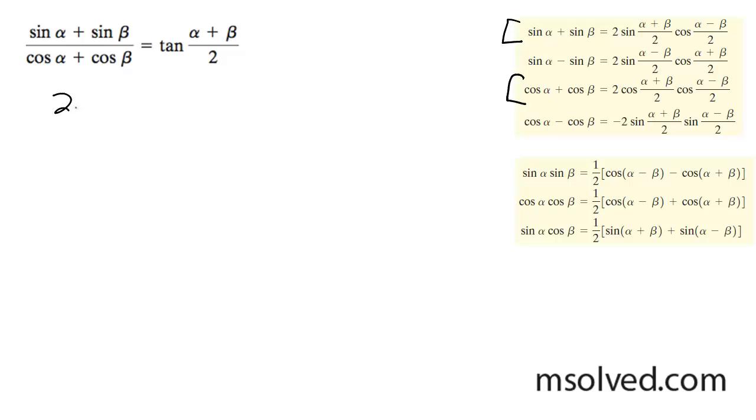Starting off here, we can go ahead and rewrite this as 2 sine of alpha plus beta over 2, and then cosine of alpha minus beta divided by 2, all over 2 cosine of alpha plus beta divided by 2, times cosine of alpha minus beta divided by 2.